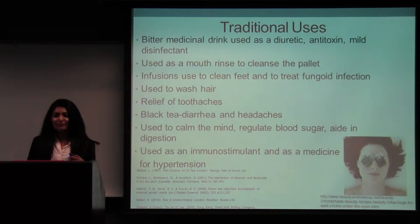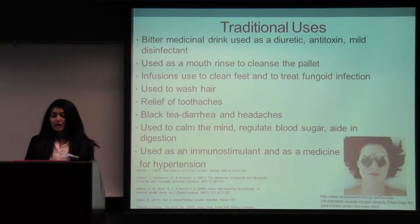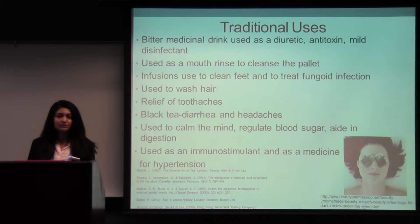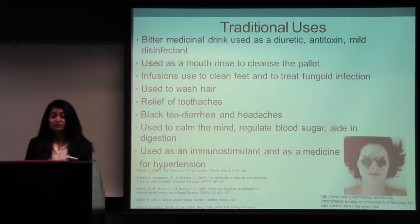Some of the traditional uses — tea has a lot of uses, so these are just a few. It's often drunk as a bitter medicinal drink, as a diuretic, antitoxin, and mild disinfectant. It does contain trace amounts of fluoride, so for centuries it's been used as a mouthwash after meals. It's also used to wash the hair. Black tea is rich in tannins, so it's been used to treat diarrhea and headaches, and it also has hypocholesterolemic properties. It's been used to calm the mind and for meditation for centuries by Taoists and Buddhists.